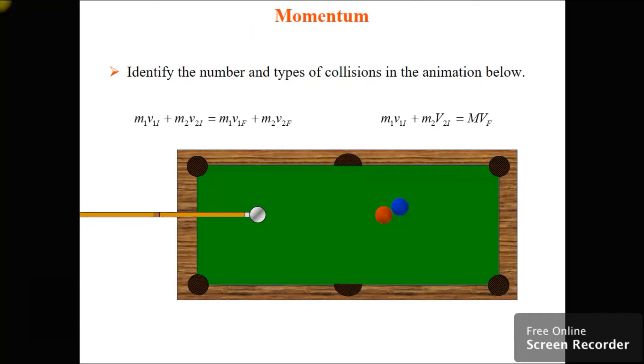So here's a classic problem. We've got billiard balls, and we're going to ask you to identify the number and types of collisions in the animation below. So bang! Bang! So two collisions. There's the cue stick hitting the cue ball, and then as it zooms to the right, the cue ball hits the red and the blue balls.